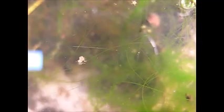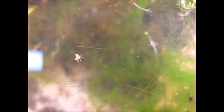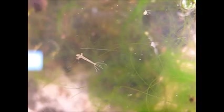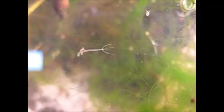In the somersaulting motion, the hydra bends over, attaches the tentacles to the surface, loosens the base, swings the base over the mouth, and attaches itself to the surface again. After loosening the tentacles, it repeats the process, and this is somersaulting.